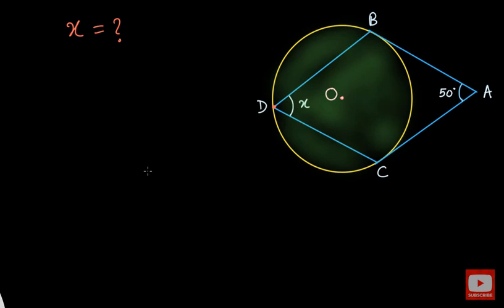Hello everyone. In this video we are given a geometric figure which is a circle and we have drawn two tangents from this point A to this circle.